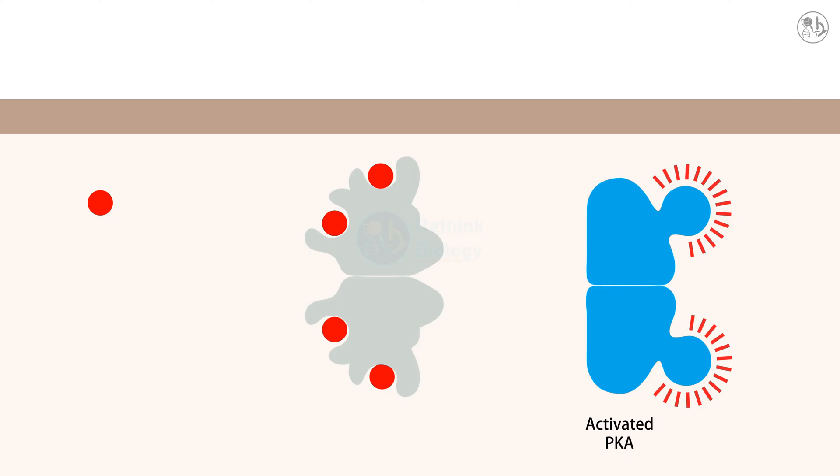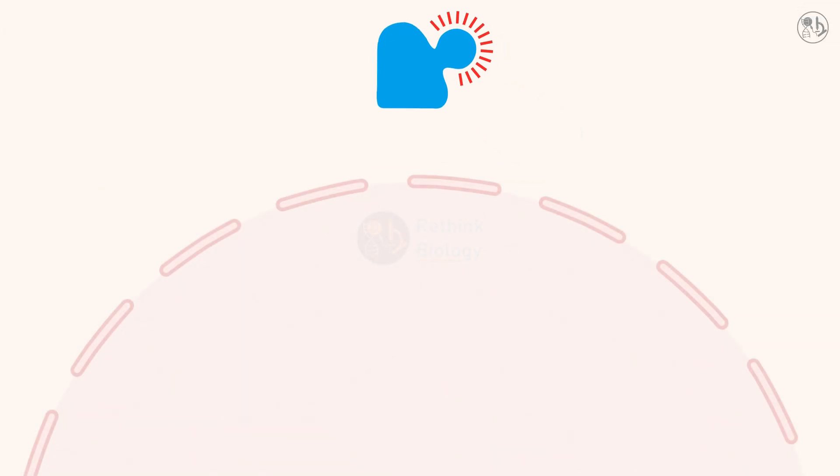These target proteins can be either intracellular signaling proteins which amplify or modify the signal, or effector proteins which carry out the final response of the cell.